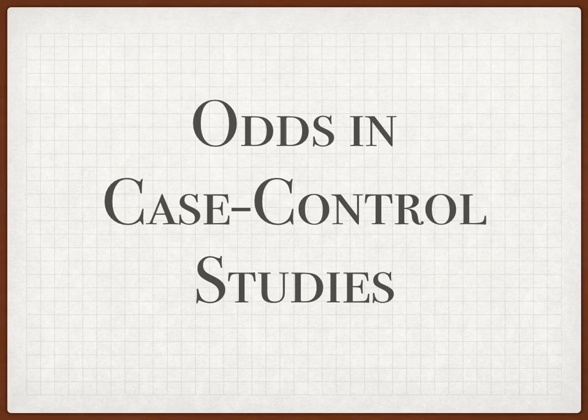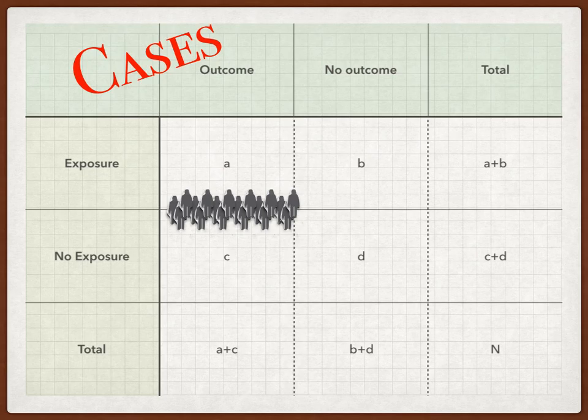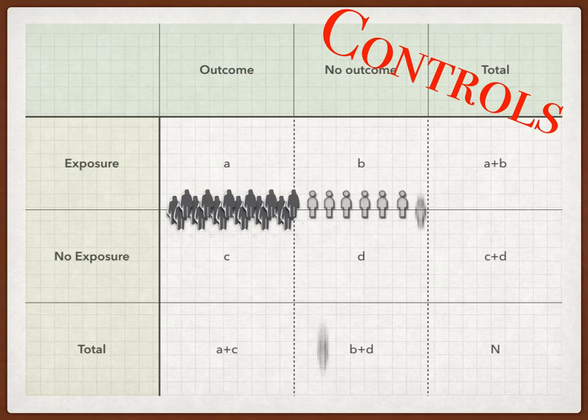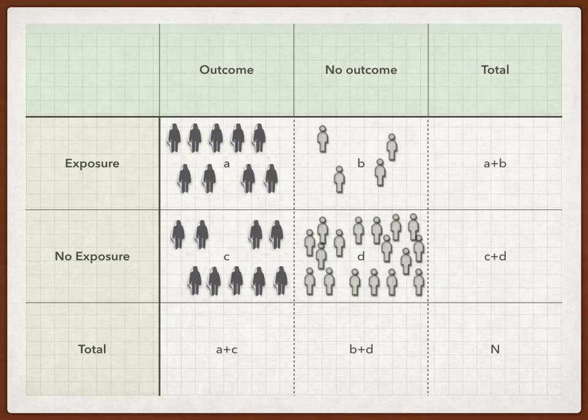Odds ratios are useful in case-control studies. When you look at your 2x2 table, you have your cases — which you select — and your controls — which you also select. So you're determining the grand total in each category. Odds ratios only require those four boxes; you don't need to know the actual total or the actual population incidence.